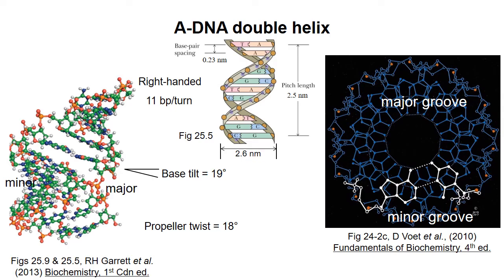A-DNA is not as common as B-DNA in vivo, so I don't want you to remember the parameters, except that it's right-handed and has 11 base pairs per turn. I will say that RNA double helices or DNA-RNA hybrid helices have structures that more resemble A-DNA than B-DNA.